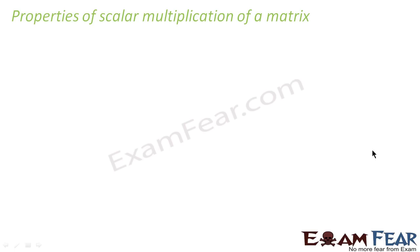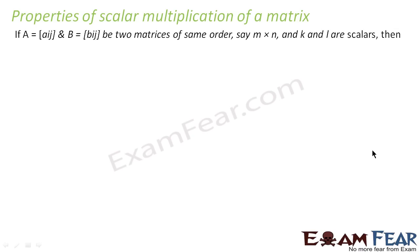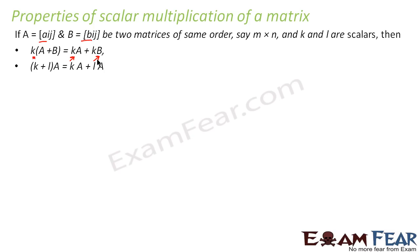Having discussed scalar multiplication, let's look at some properties. If A and B are matrices of the same order and k and l are scalar numbers, then: first, k(A+B) = kA + kB; and second, (k+l)A = kA + lA. These work just like normal arithmetic — you can distribute the scalar over matrix addition or combine scalars before multiplying.